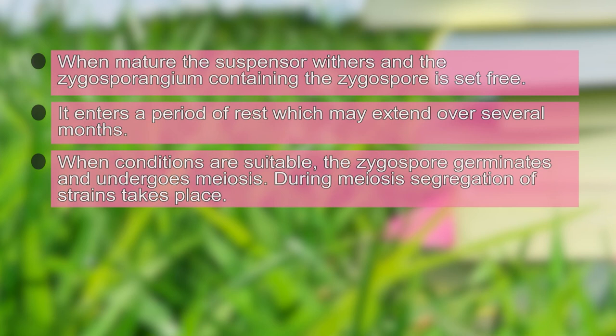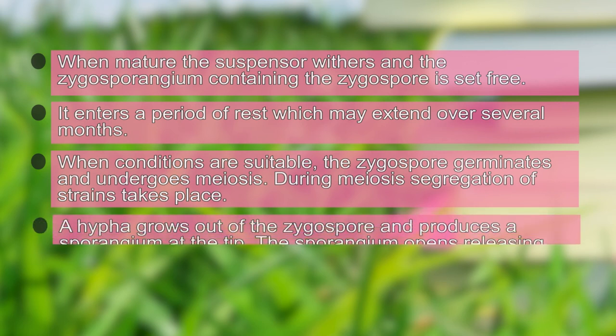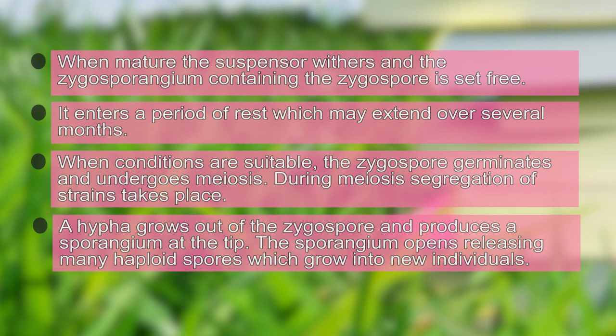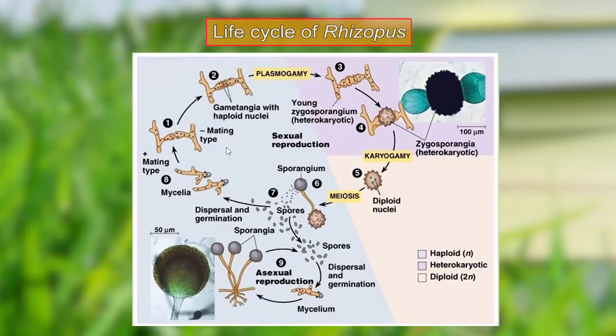When conditions are suitable, the zygospore germinates and undergoes meiosis, converting the diploid nucleus into haploid nuclei. A hypha grows out of the zygospore and produces a sporangium at the tip. The sporangium opens and releases many haploid spores, which grow into new individuals. In this way, the diploid nucleus is converted to haploid spores that germinate to give rise to new mycelium.